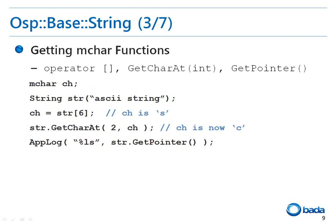I'd like to explain the string functions that can be used to acquire a character pointer or character. Since a string is basically a Unicode character sequence, you can handle a string as an mchar type that is used to save Unicode characters. For example, I declared an mchar type variable CH and created the string using a C string made with an ASCII string. Here I retrieve the 7th character using the square brackets operator and character S is saved in the variable CH. You can use the getCharAt function to perform the same functionality as the square brackets operator. The getPointer function is used to acquire the mchar pointer to the string.